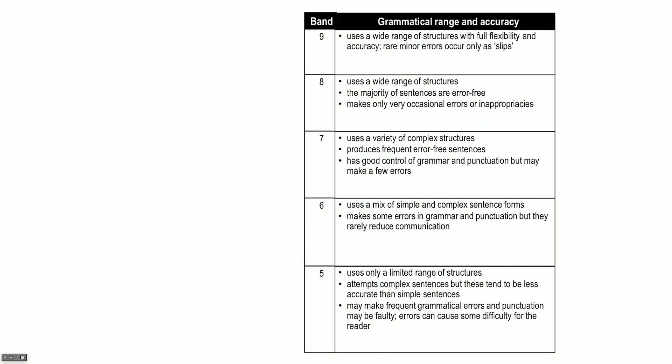We've looked at the horizontal scoring. Now let's look more deeply at the vertical scoring, because for grammar, you're also scored from zero to nine. So let's do a scenario. I'm the examiner looking at your essay. You used a variety of complex structures — well done. You produced frequent error-free sentences and have good control of grammar and punctuation, but maybe made a few errors. So I'm going to give you a seven for grammar.